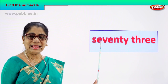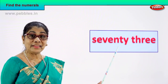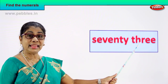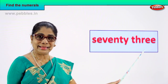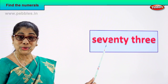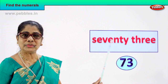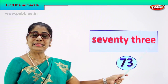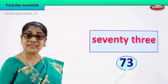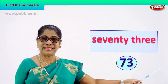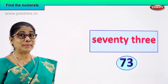Seventy. S-E-V-E-N-T-Y. T-H-R-E-E, 3. Seventy-three — that's the number name. Very good, you read it correctly. Seventy-three. How do we write the numeral for this number name? Seven and three — seventy-three, 73. Good.